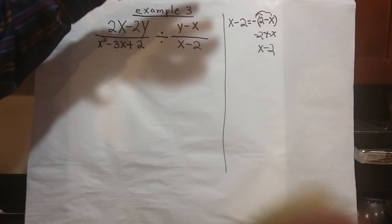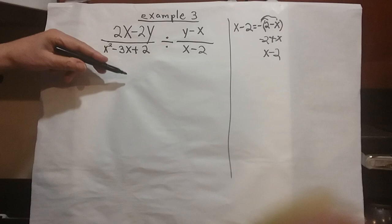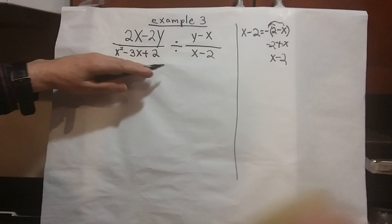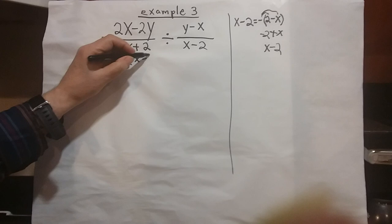We're going to solve this third problem doing exactly what we did on the others. We're going to copy everything, rewrite it, and we're going to factor. So take out a 2, we've got x minus y.